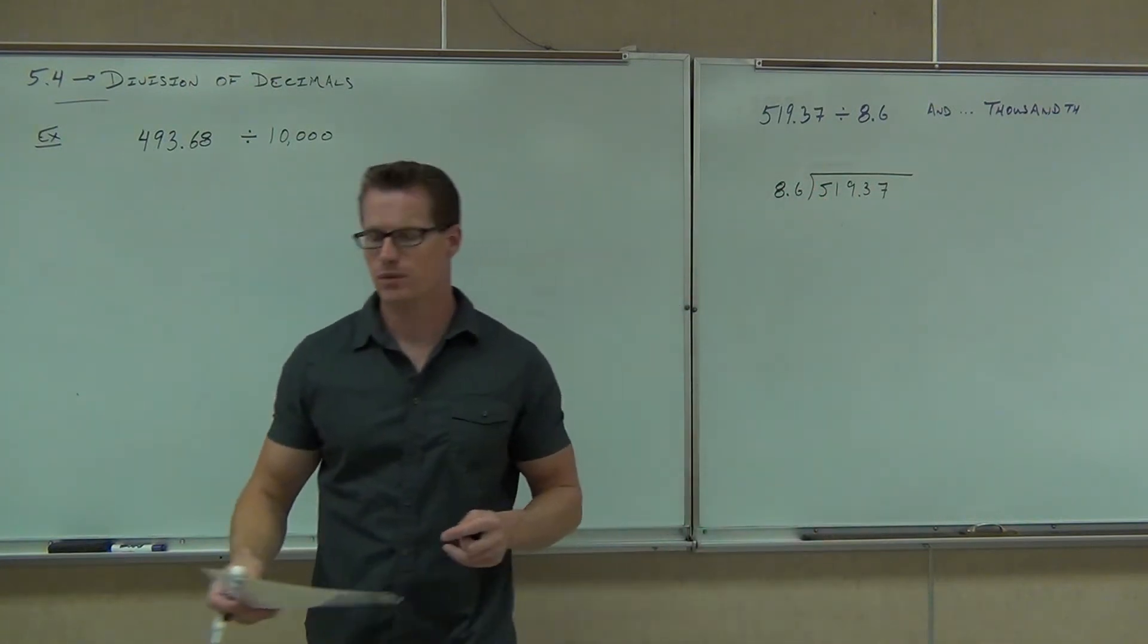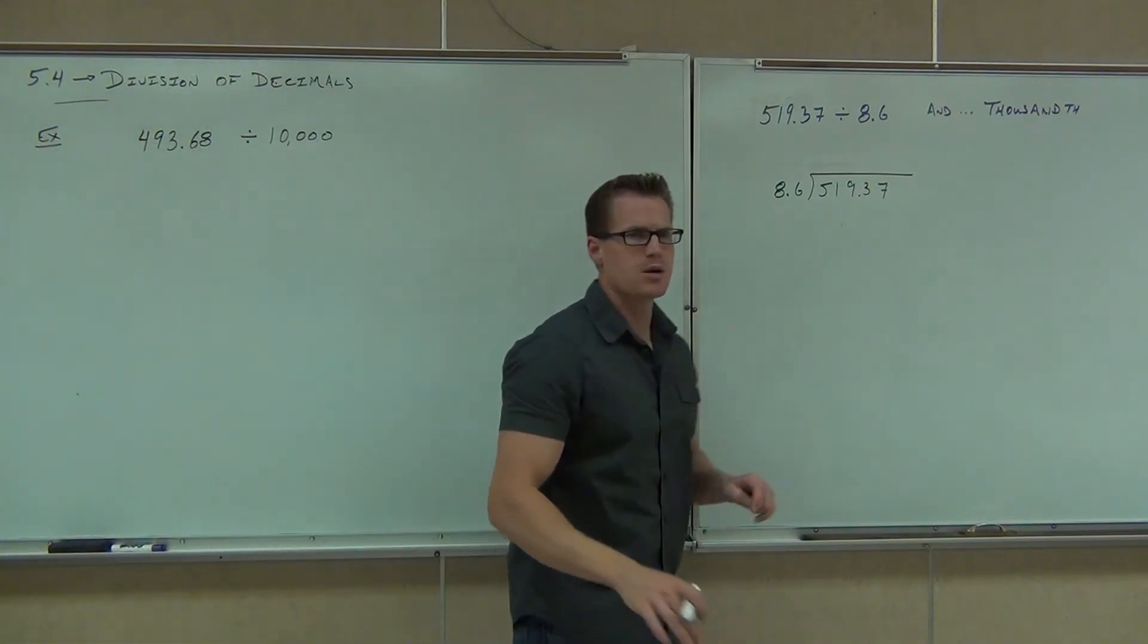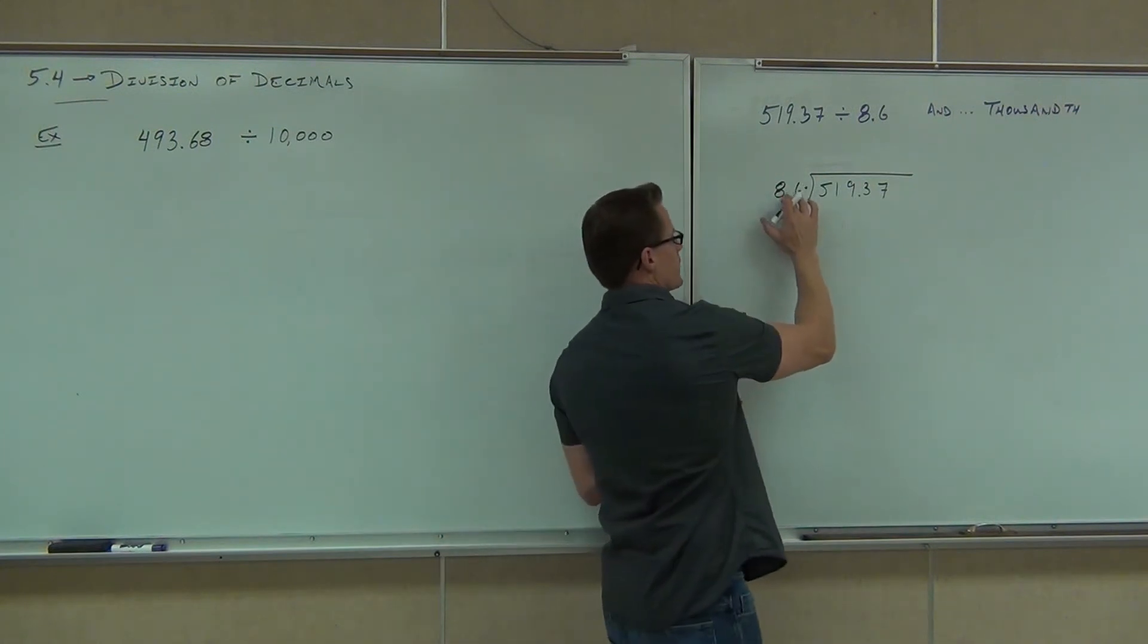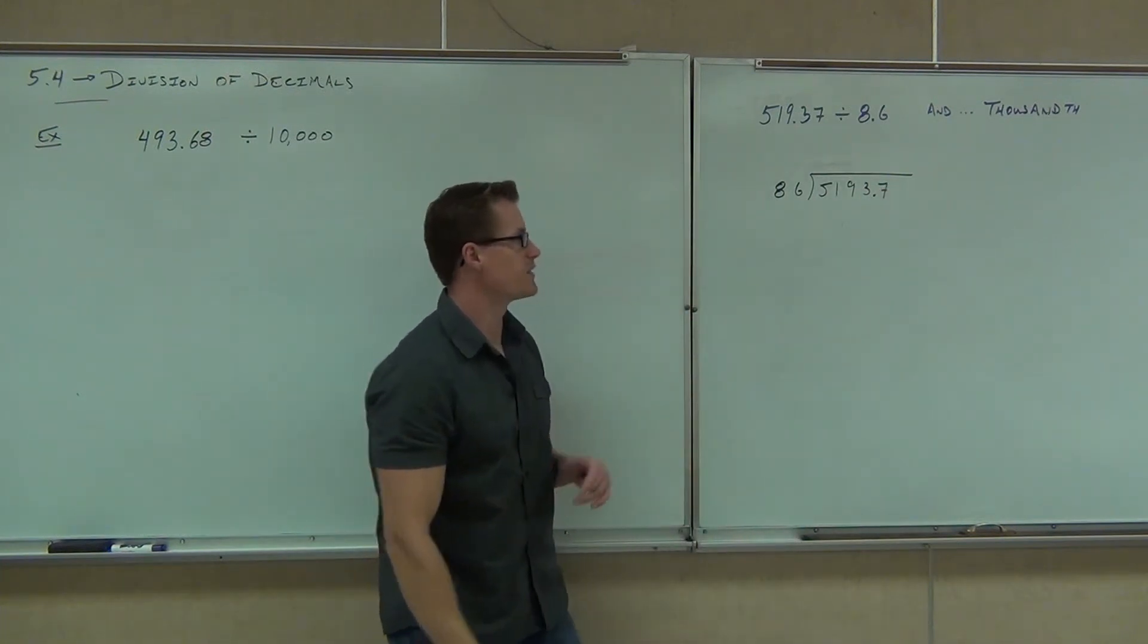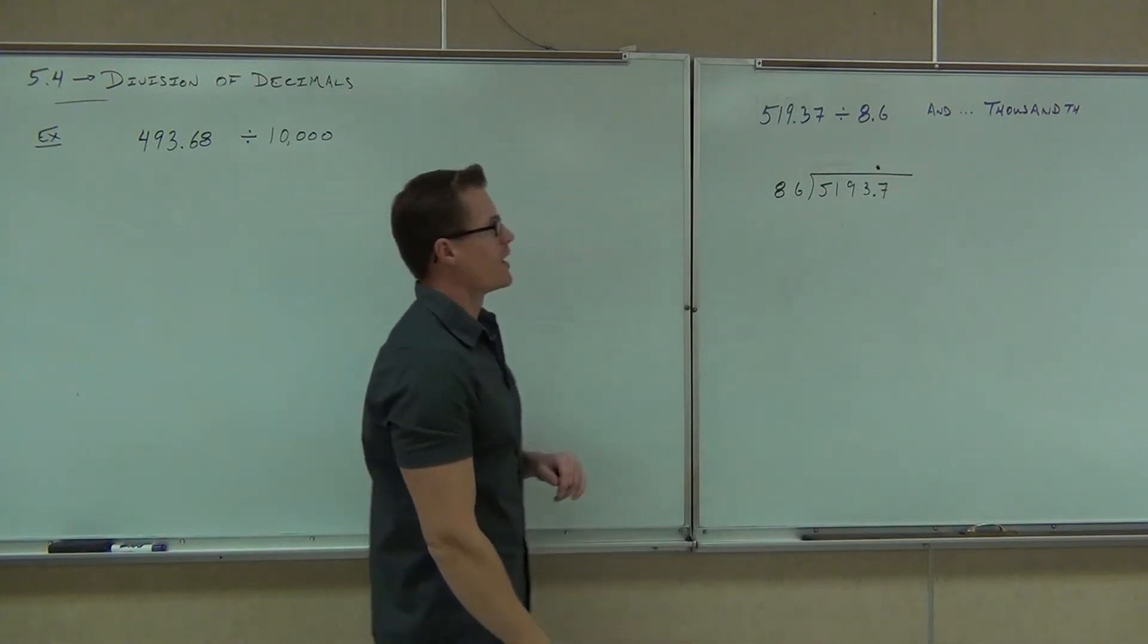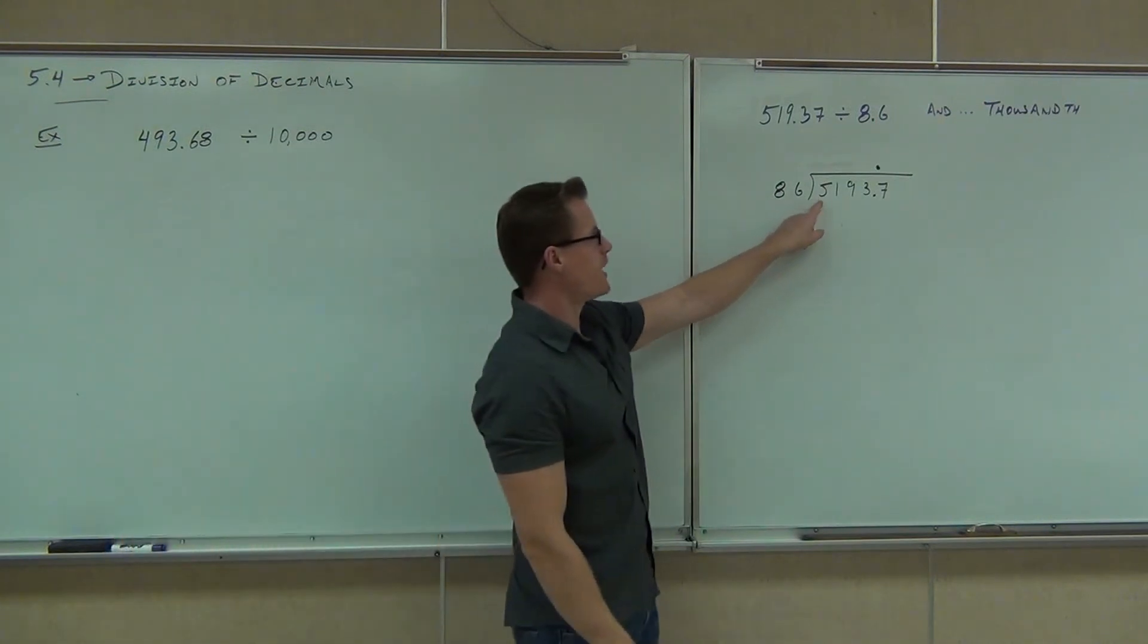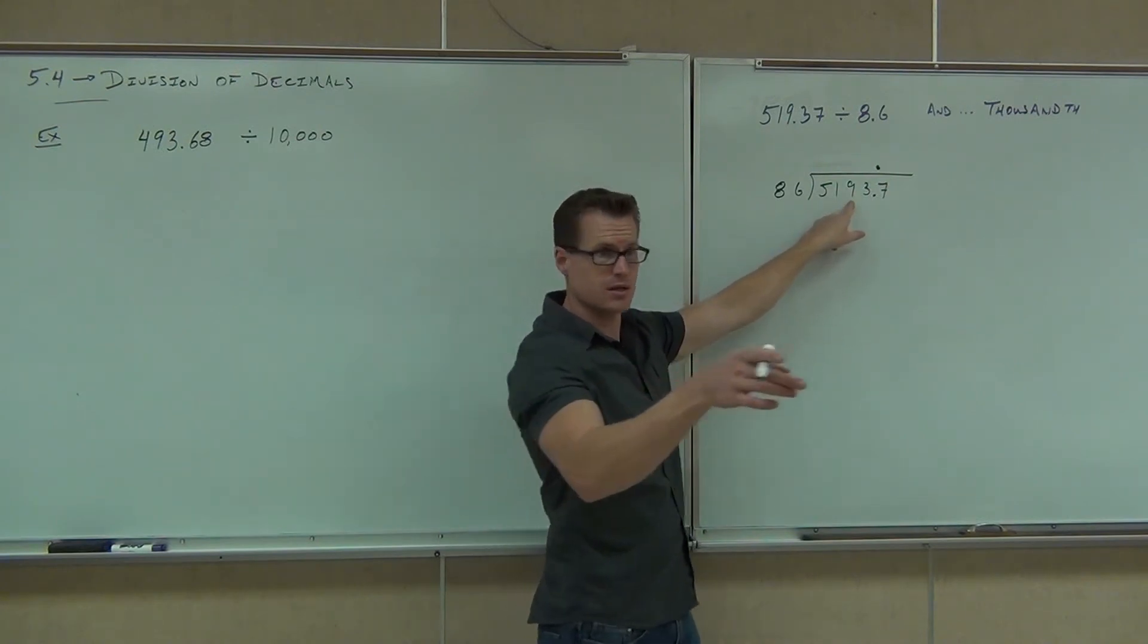Okay, so 8.6 outside of 519.37, number of decimal places we're moving is? One. One. Good. So, 86 and we change it to 5193.7 and, of course, we'll put the decimal place right up there. Oh, my gosh, to the 1000th. We've got a lot of work to do. So, we'll start with 86. 86 into 5? No. 51, no. 519. How many times into 519? Six times?